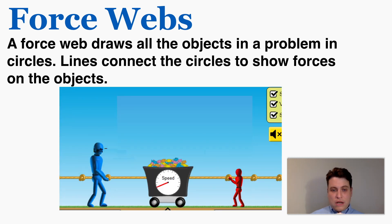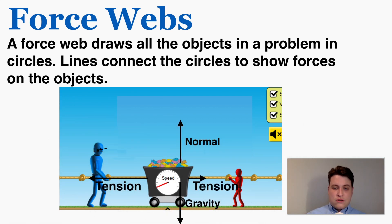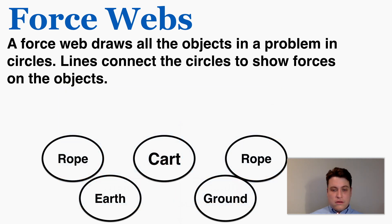Let's say that we have these two people trying to pull this cart in different directions. So on the cart I have gravity, normal, the force of tension this way, and a smaller force of tension this way. So these are my objects involved in the problem, the cart, the earth, the ground, and two ropes on either end of the cart.